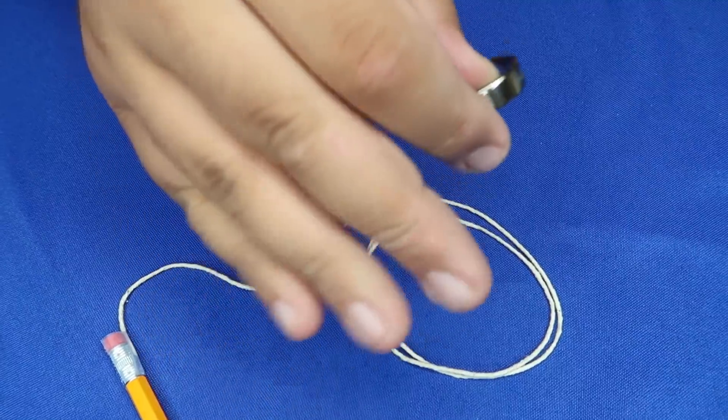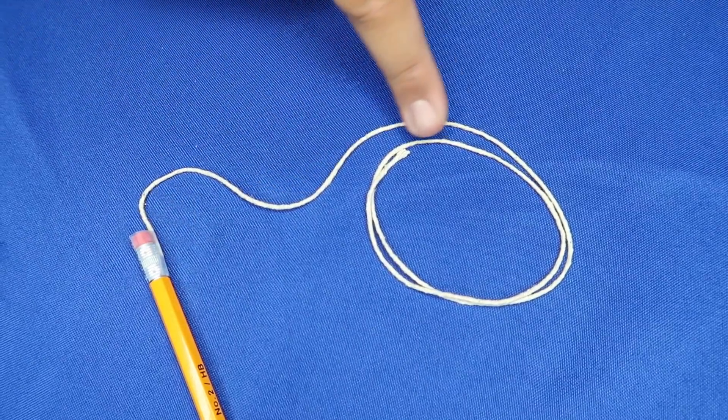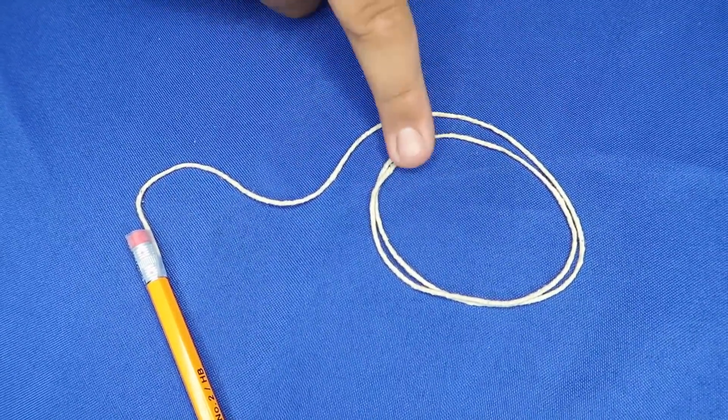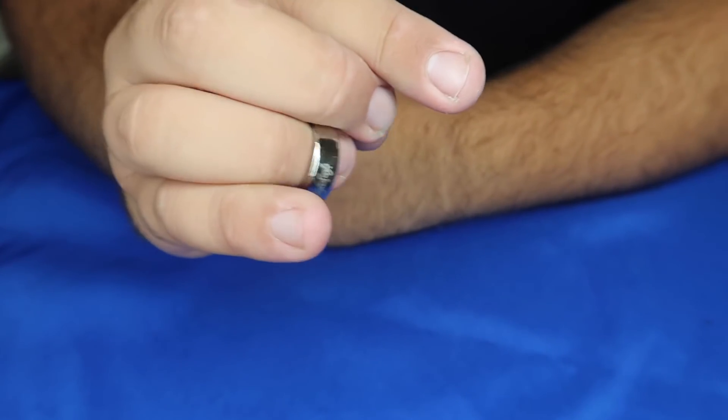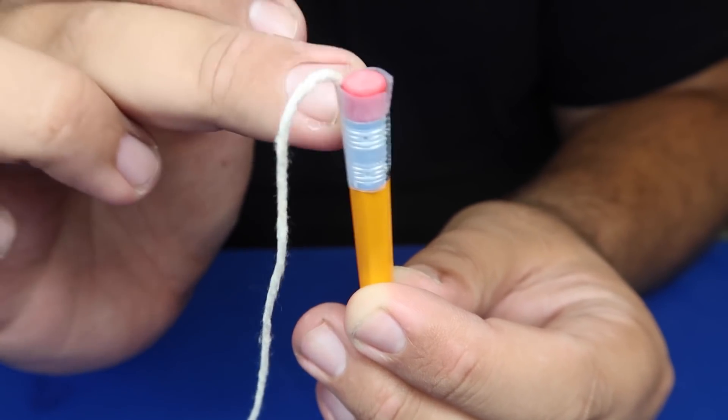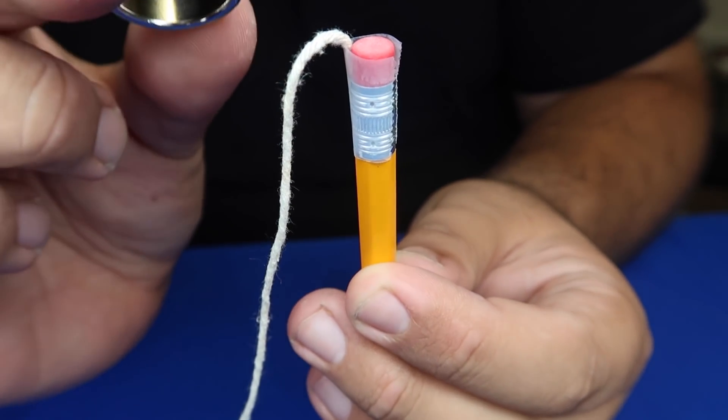Here's how it's done. For this trick, all you're going to need is a pencil, a piece of invisible thread. This is obviously not invisible thread, this is just a normal piece of string so we can demonstrate it for you. And you're going to need a finger ring. So first things first, the piece of invisible thread needs to be attached to the top of the pencil. You can do that with a piece of magician's wax or tape.